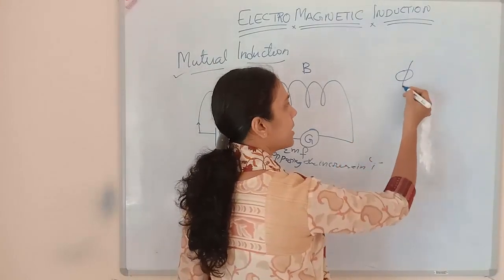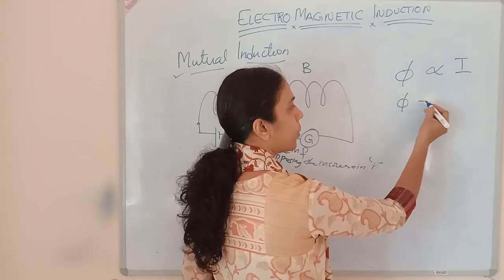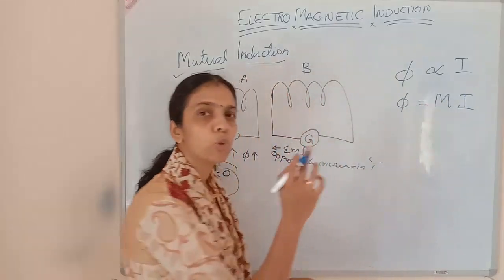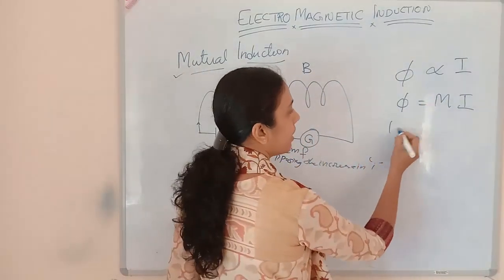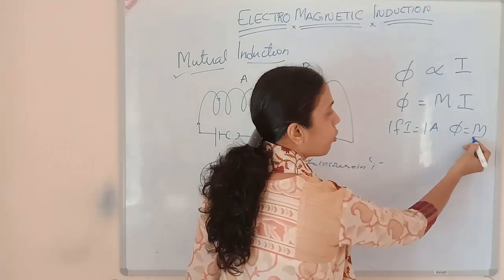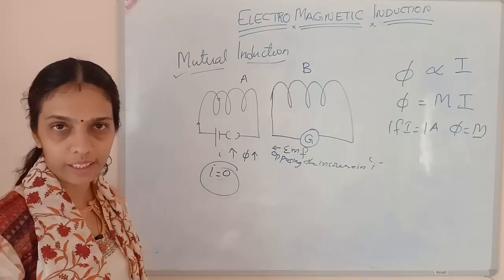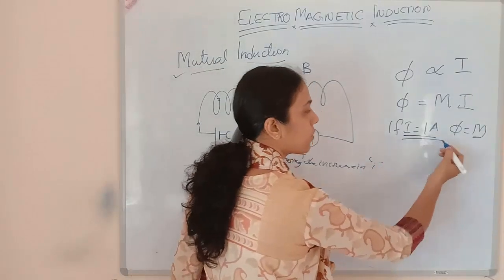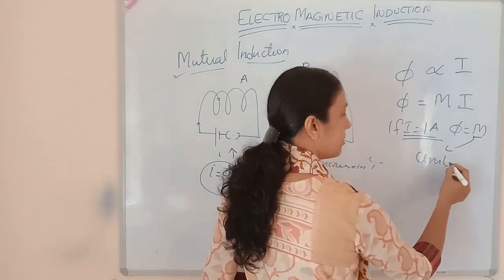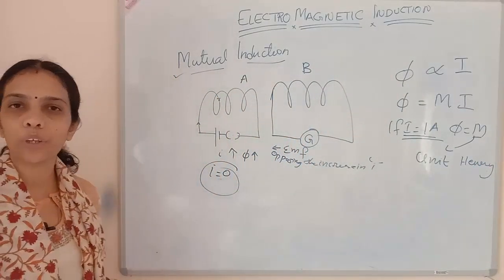The flux linked with the circuit is directly proportional to the current. So φ = M × I, where M is called mutual inductance. If I equals 1 ampere, then φ equals M. That is, mutual inductance between two coils equals the flux linked with the second coil when 1 ampere of current flows through the first coil. The unit of mutual inductance is Henry, same as self-inductance.